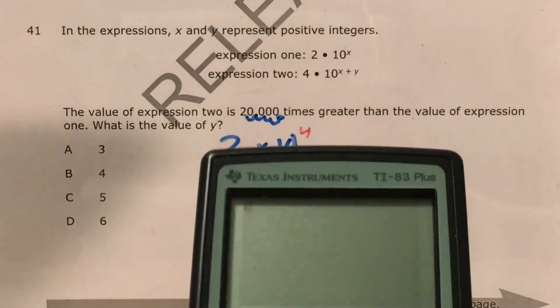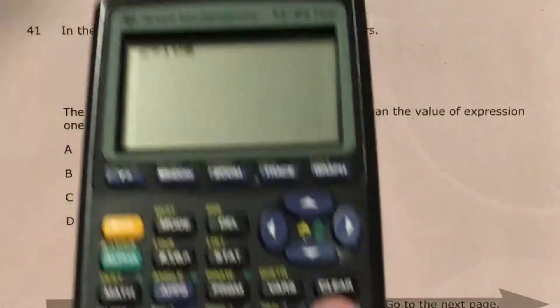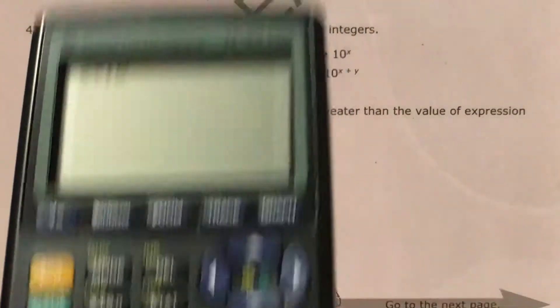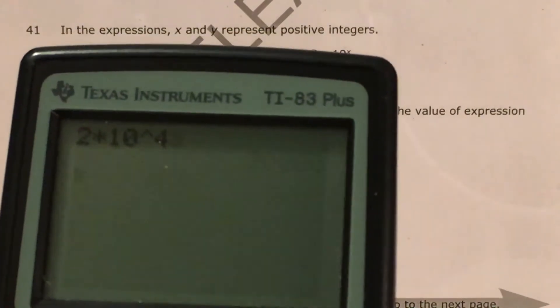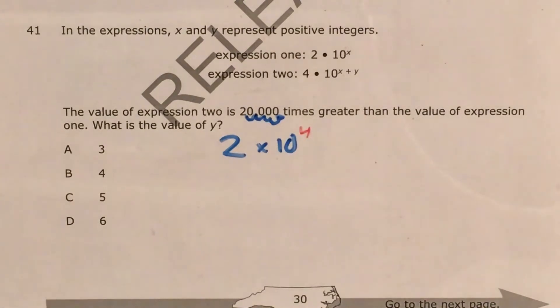And just to make sure, I'm going to try that on my calculator, 2 times 10, and you'll be able to find this button here. Whatever I type to the right of this, the calculator is going to read as an exponent. So 2 times 10 to the 4th, that's 20,000. So I know I did that step correctly.